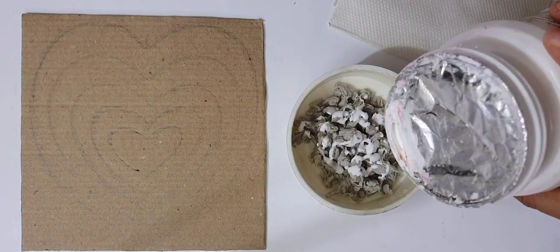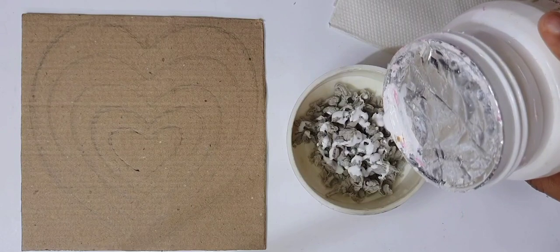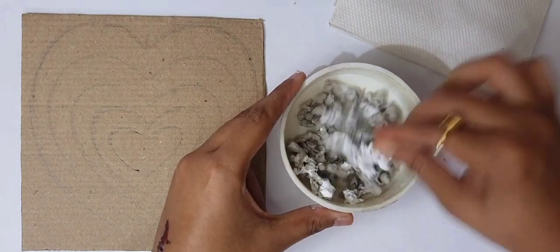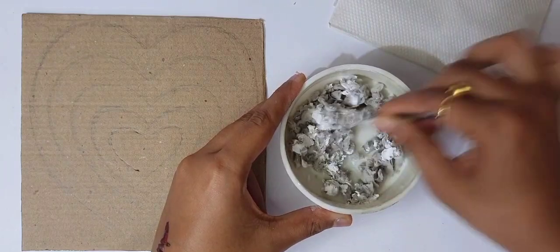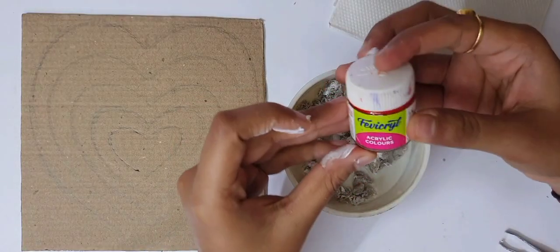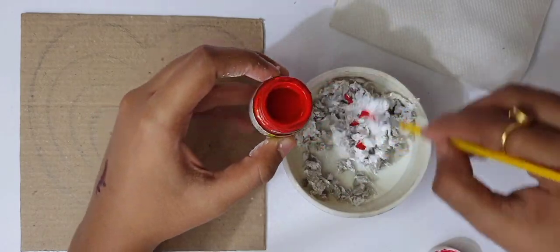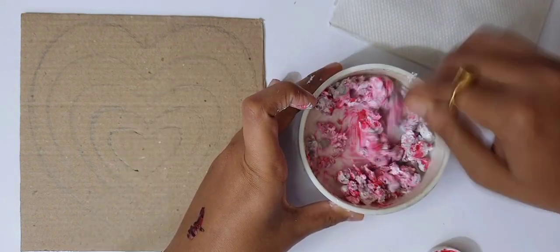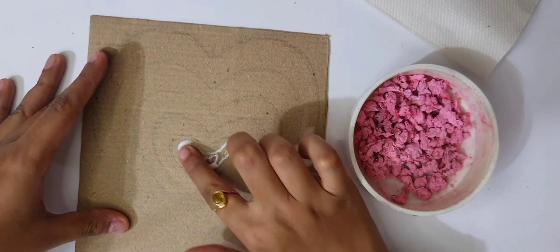First, in the tissue we have to pour Fevicol, white acrylic paint, and then take red color. Just a drop of red color will turn it into a light pink color.